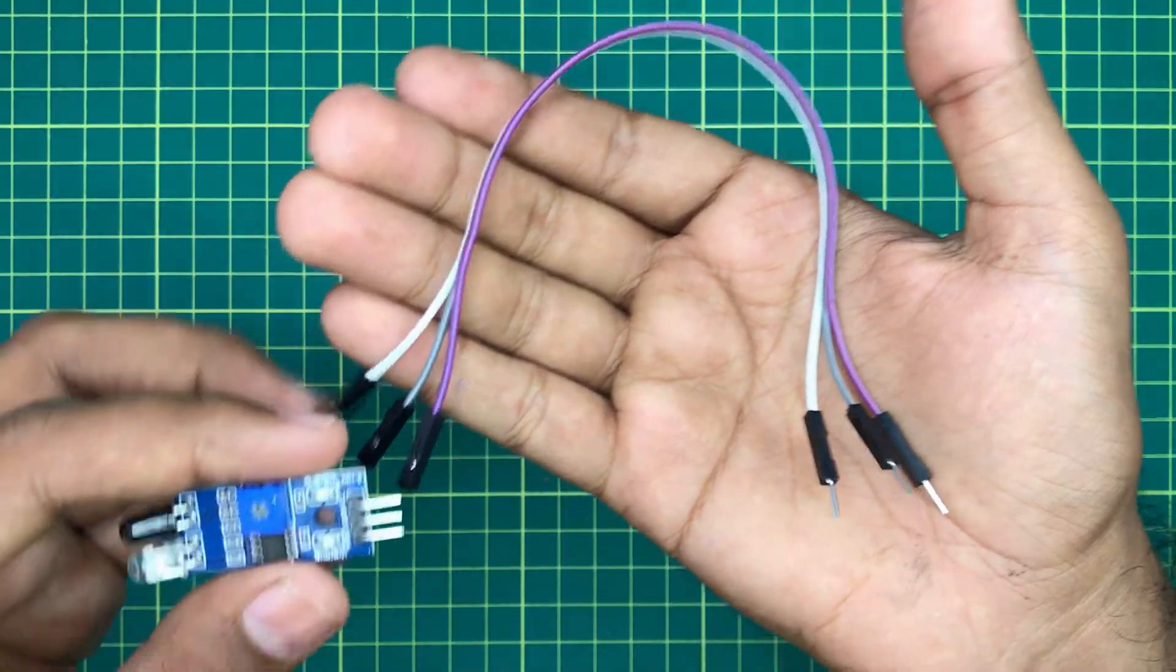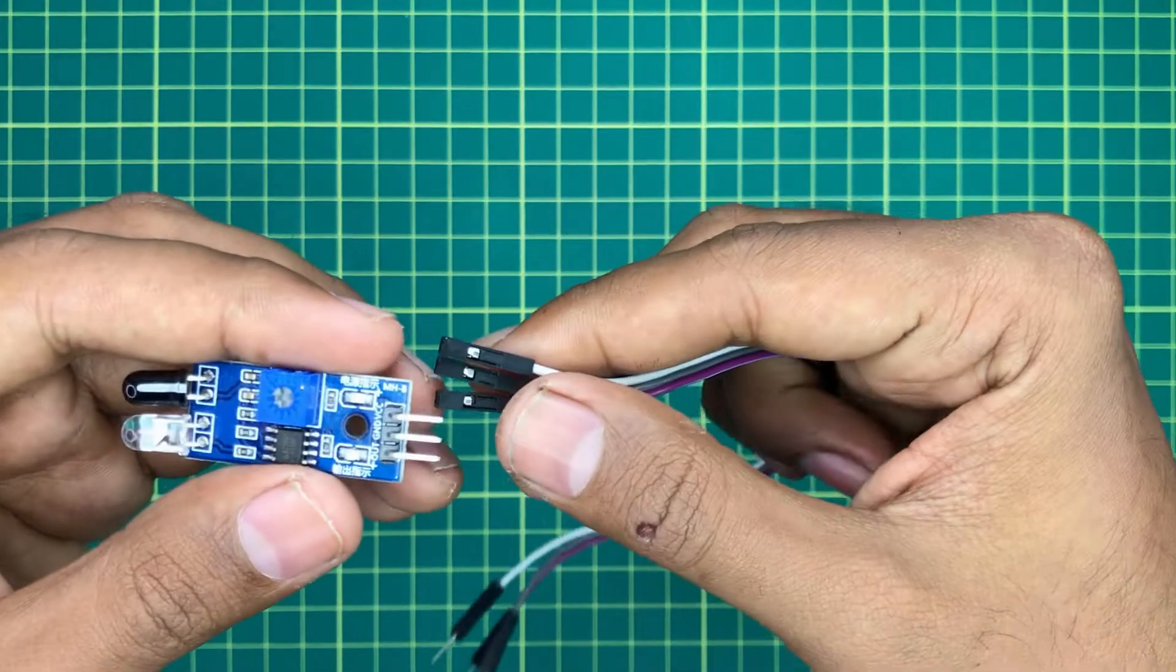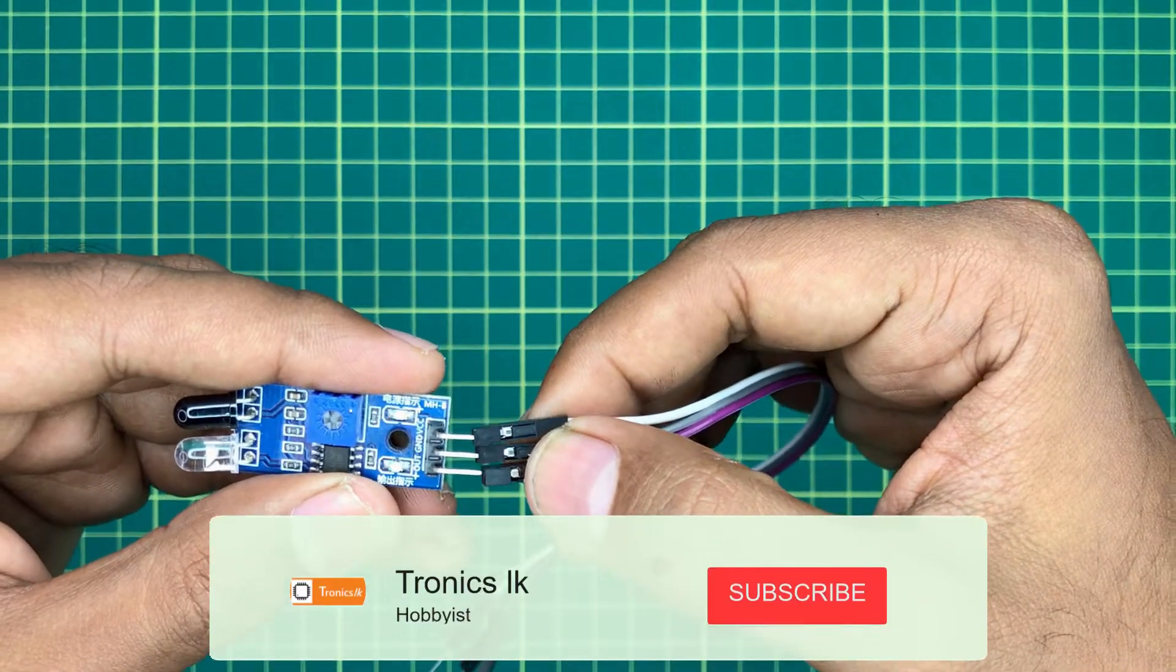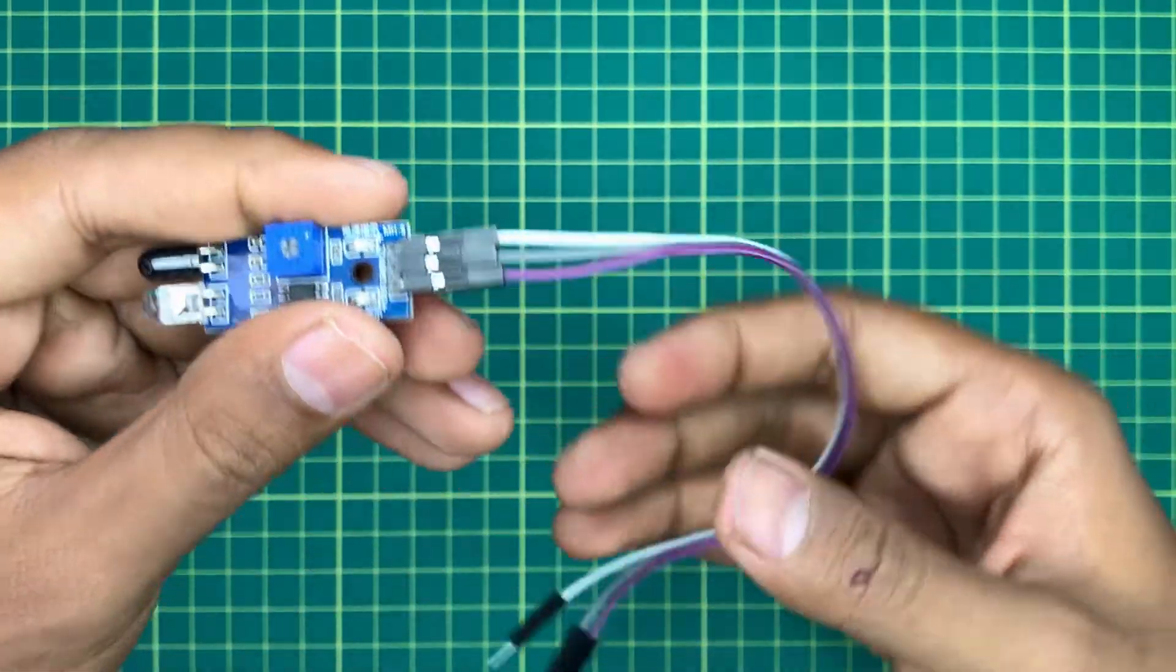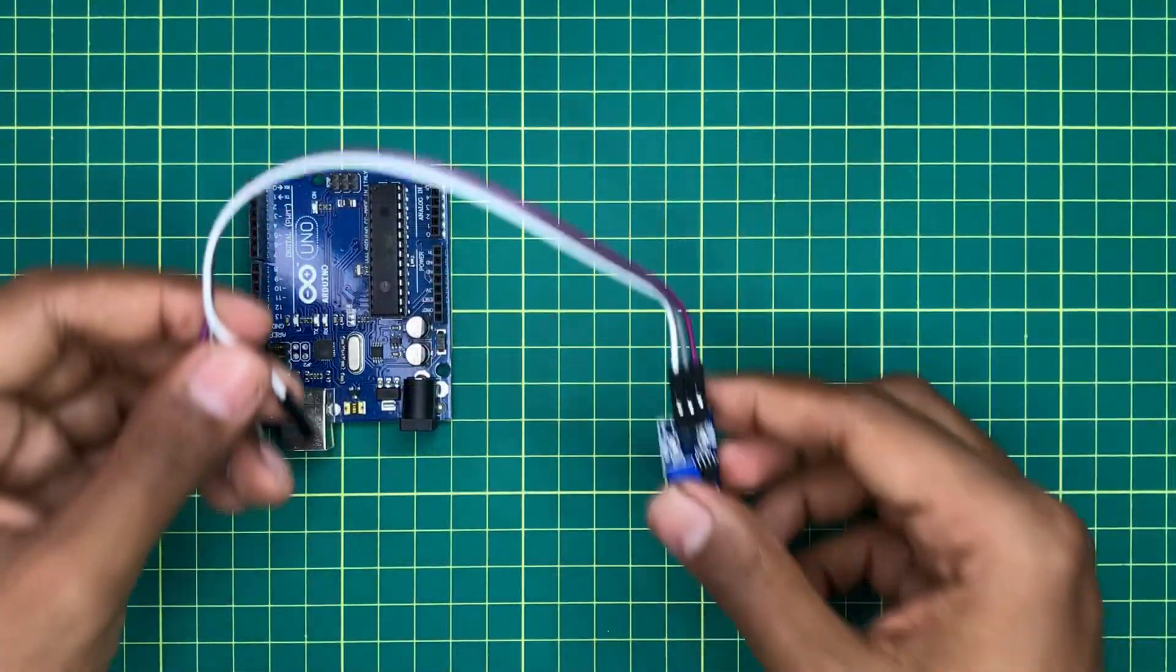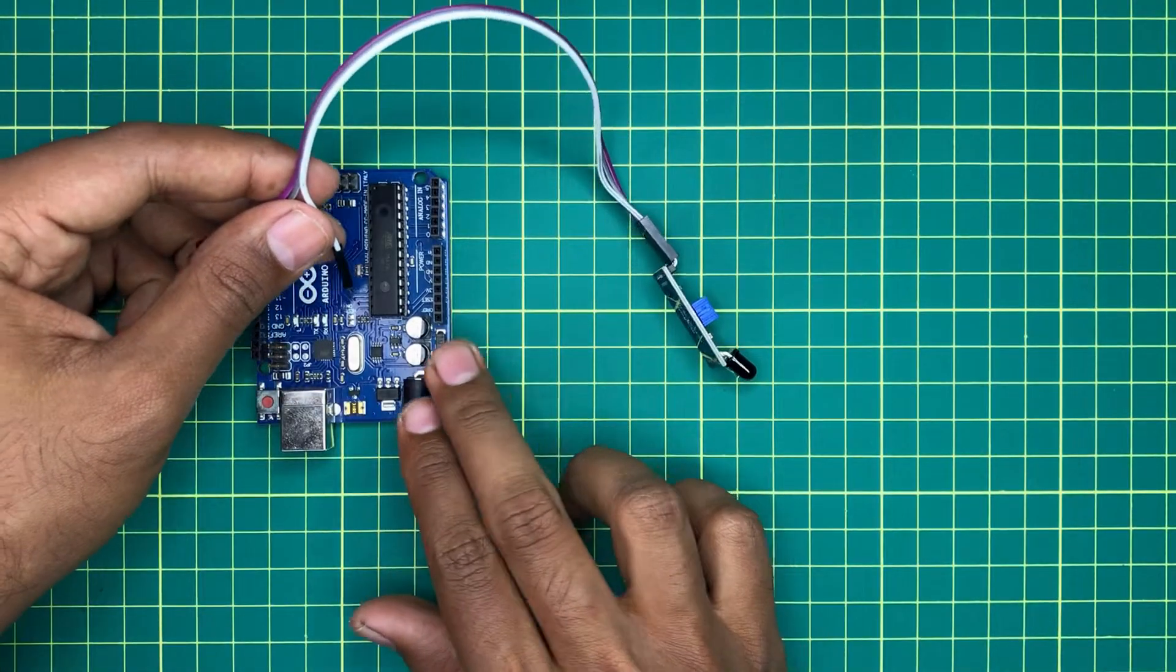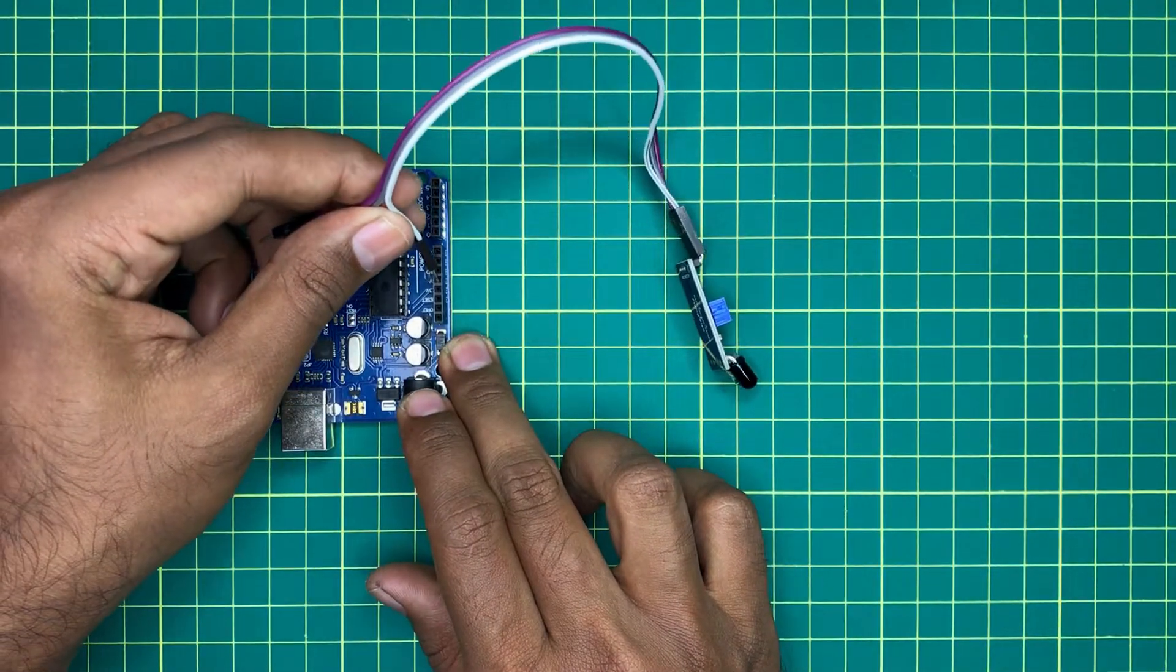Take three male to female jumper wires and connect them with the sensor. First, connect the VCC pin of sensor with the 5V pin of Arduino.